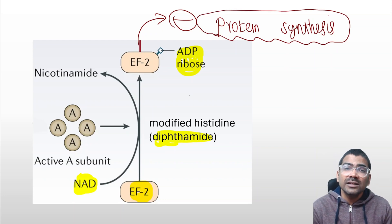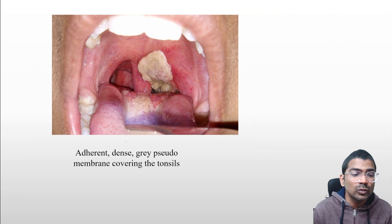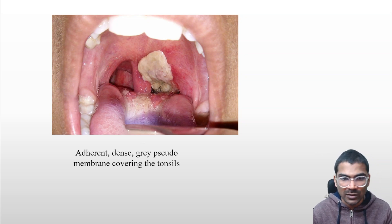Because protein synthesis is inhibited, there is cell death and necrosis, which leads to a thick, dense grey pseudomembrane over the tonsils.